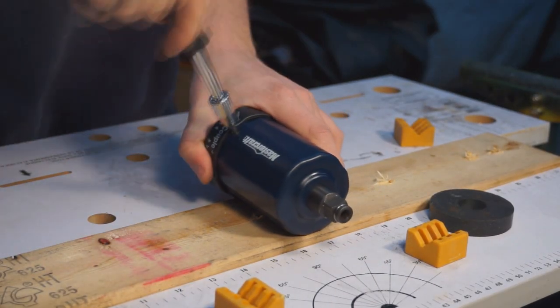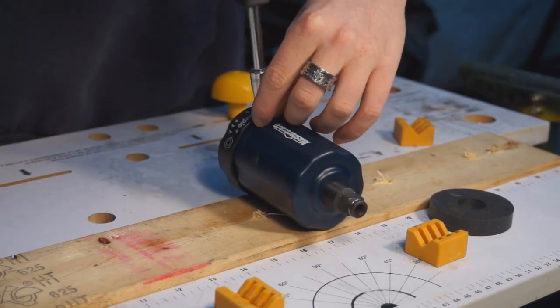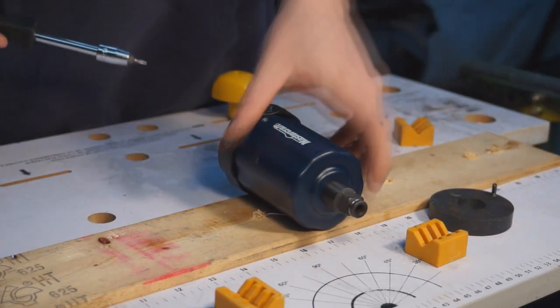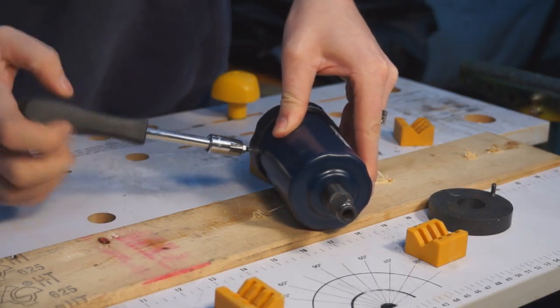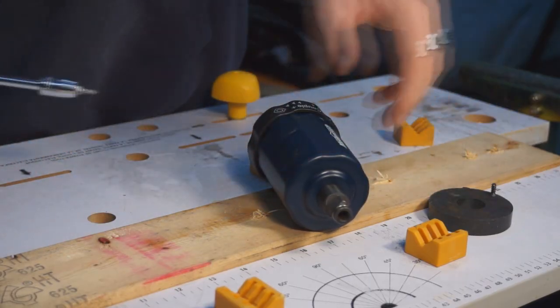Taking the impact wrench adapter apart was surprisingly easy. It was only held together with three small torque screws that weren't hidden or covered, and they weren't the safety torques that have the little dot in the middle.